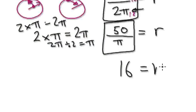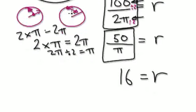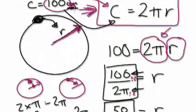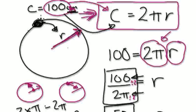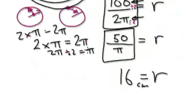So R equals 16. So, because we are working in centimeters, then the answer will be centimeters. So the radius, the radius of this circle here, if this circle has a circumference of 100 centimeters, then the radius must be around about 16 centimeters.